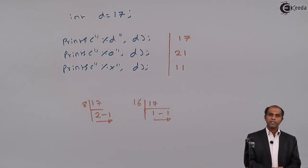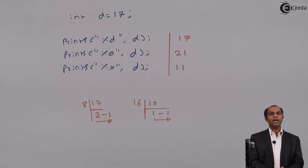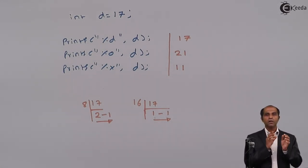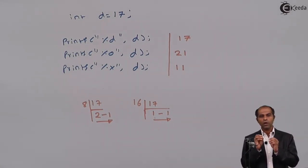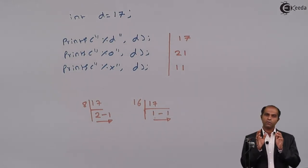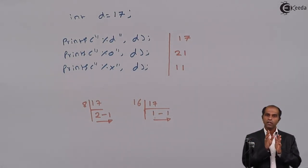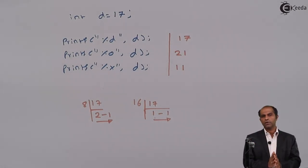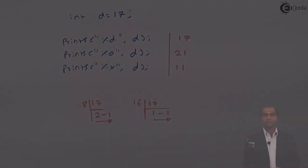To summarize: %f, %e, and %g are used with float values, each with a difference in display format. %o, %x, and %d are used with integers — %d for decimal values, %o for octal values, and %x for hexadecimal values. Thank you.